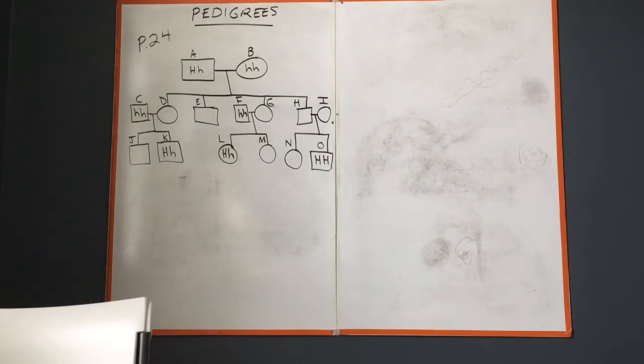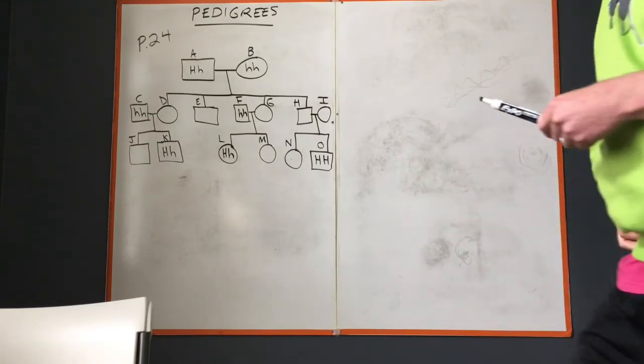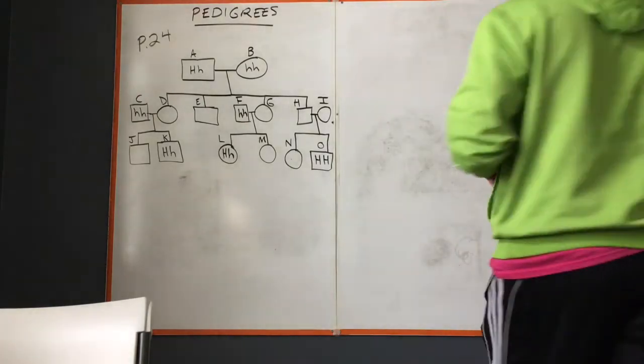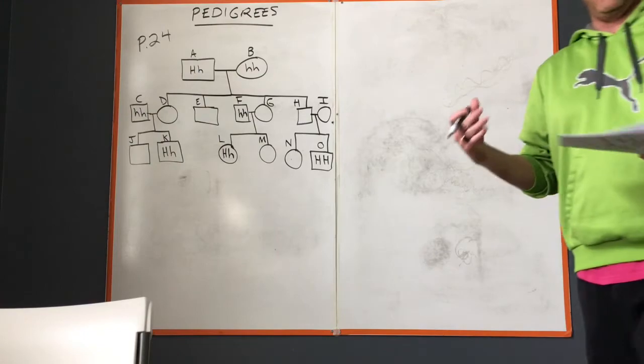Pedigrees can be downright nasty problems, but the big thing with pedigrees is that we want to be able to make predictions about what is happening when two organisms have a particular offspring.